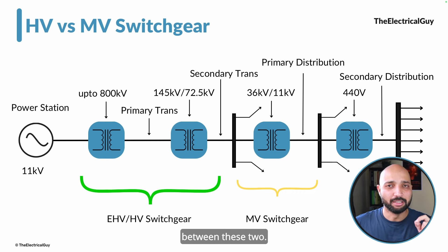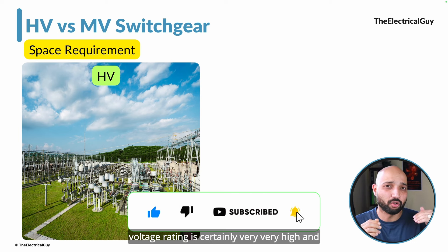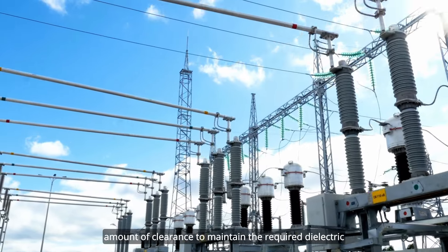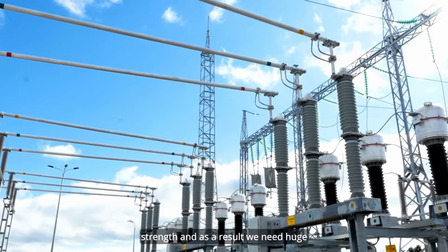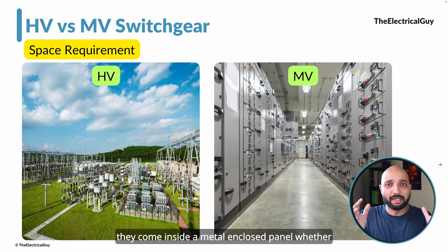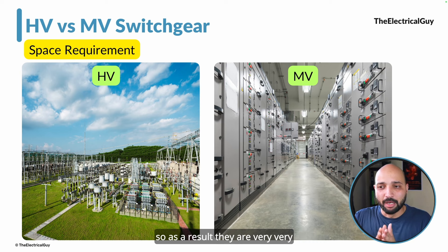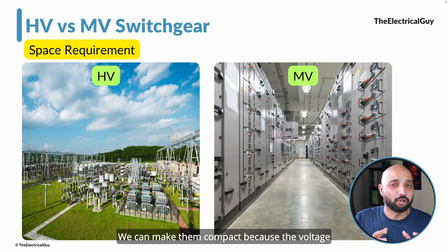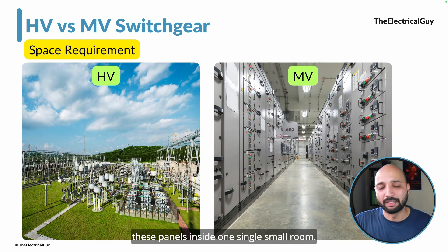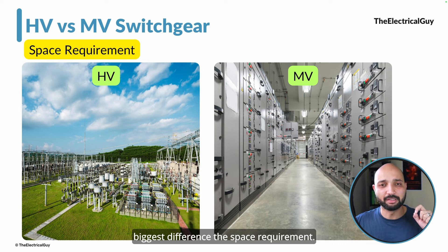Now let us understand the differences between these two. Starting with the first and most important difference: space requirement. When we talk about high voltage, the voltage rating is very high, and when using air insulated switchgear we need to maintain certain clearances to maintain the required dielectric strength, requiring huge land. On the other hand, medium voltage switchgear comes inside a metal enclosed panel — AIS or GIS — and is very compact, allowing many panels to fit inside one small room.